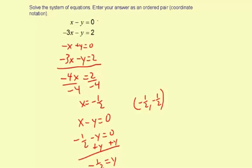So let's just check real quick. Negative 1 half, and then minus negative 1 half is plus 1 half, equals 0. So it works in the first equation.